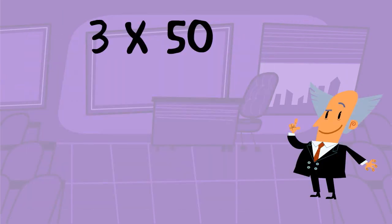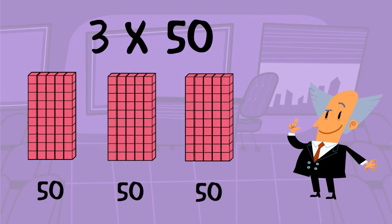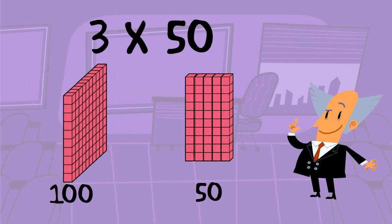Using the example 3 times 50, we can represent that by making 3 groups of 5 rods, or 50 each. By putting 10 of those together, we now have 100. 100 plus 50 equals 150. 3 times 50 equals 150.